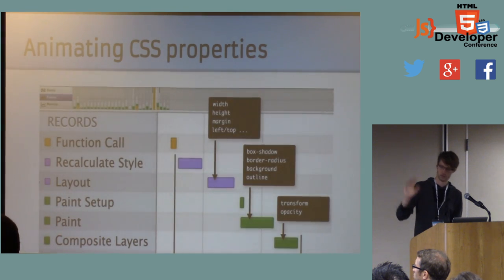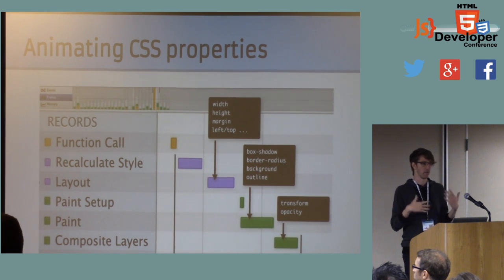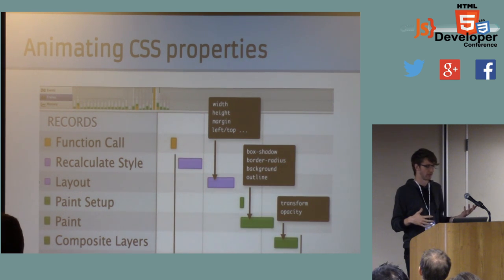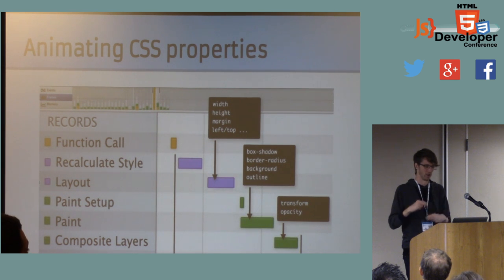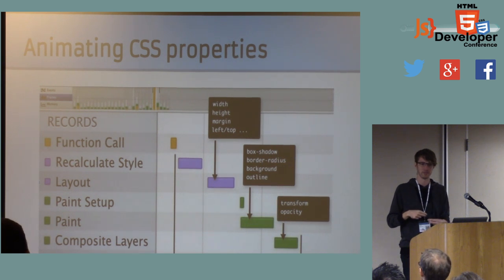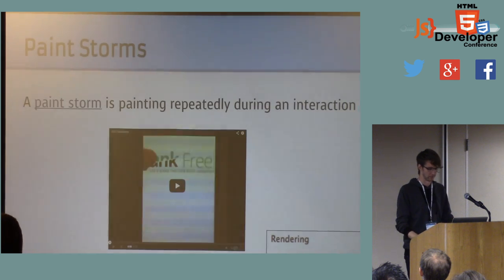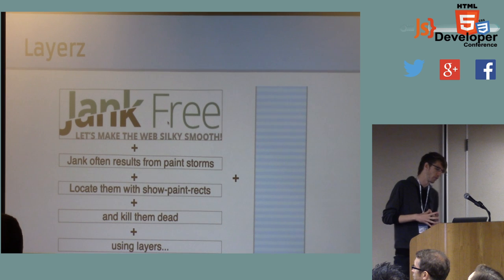That's when it's useful to get out the timeline view in DevTools, which will show you exactly what's happening. One really bad pattern that comes up sometimes is people will set style and then force synchronous layout and then go over and over again — the same kind of thing can happen with painting, especially if you're doing this every frame. Paint storms: not good. How do you avoid them? The best we can offer at the moment is using the same compositor techniques that the browser uses to scroll the page — essentially using transform and opacity animations.